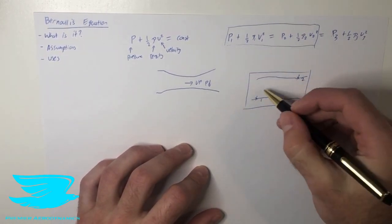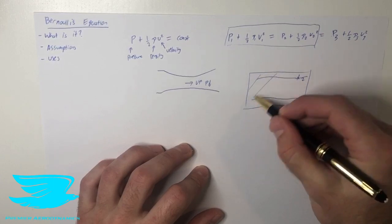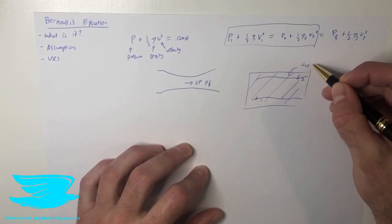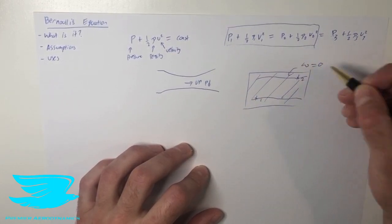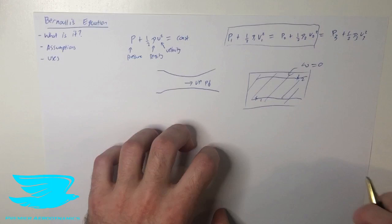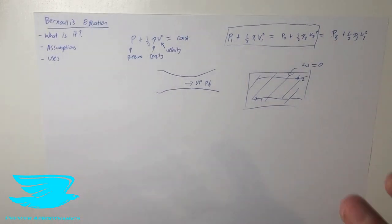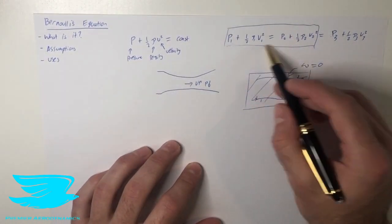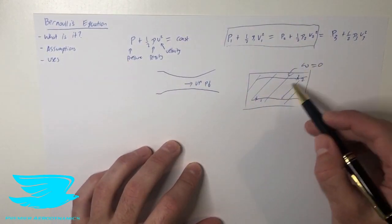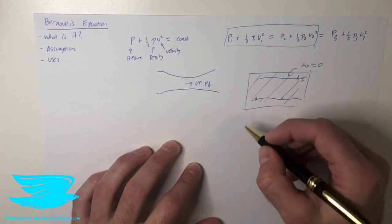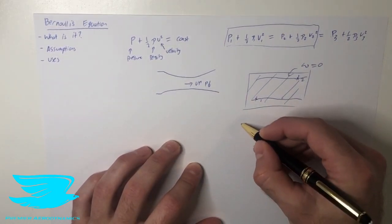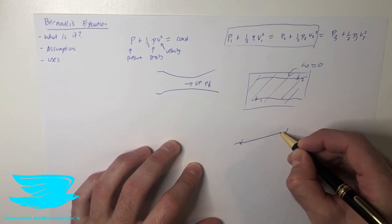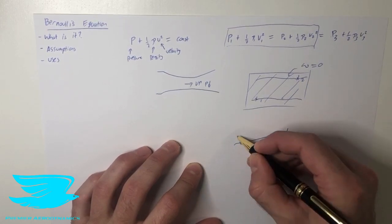What does irrotational mean? It means that in the entire flow domain, the vorticity is zero. If there is vorticity at some point, we cannot use this equation for that situation. The only time we can use this across points on different streamlines is if the flow is irrotational throughout the entire domain.